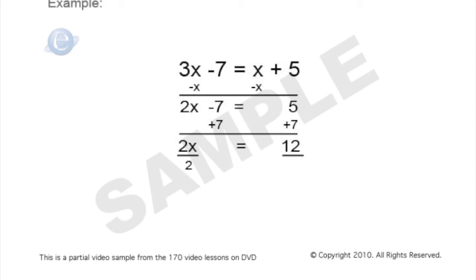If 2x is equal to 12 and we divide both sides by 2, we find that x is equal to 6. So we've actually solved for the value of x. It's equal to 6.